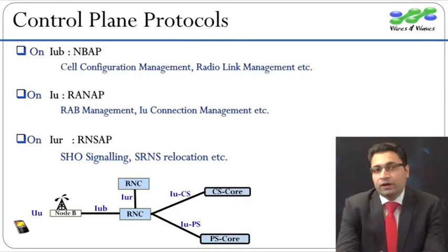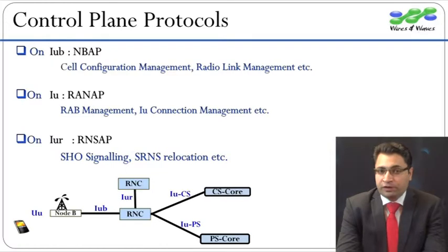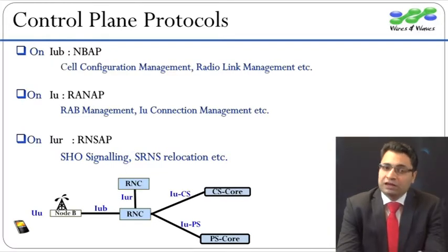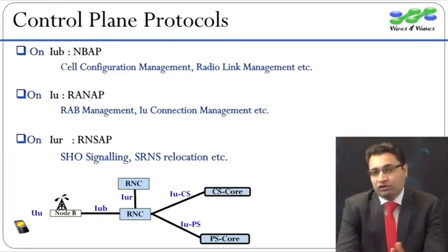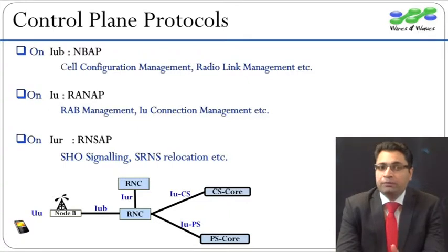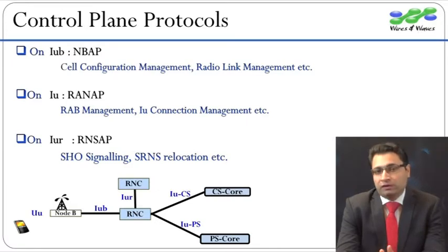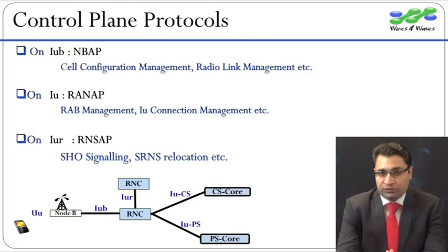Let us discuss just one or two functions of each protocol. Let us begin with NBAP. NBAP, or Node-B Application Part, is used on the IUB interface for cell configuration management and radio link management. Using NBAP, Node-B informs the RNC about current transmitted and received power levels, which is the basis for uplink and downlink load calculations.